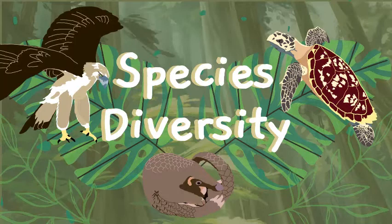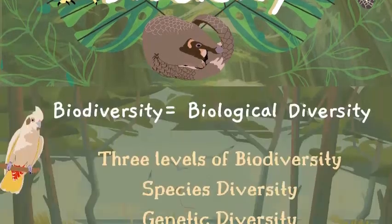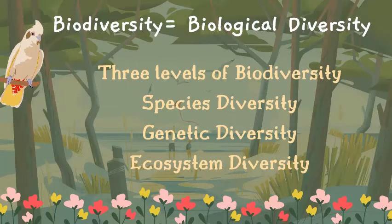The numerous species that change through time refers to what we call biodiversity. Biodiversity is coined from the words 'biological diversity.' Scientists refer to three levels of biodiversity: species diversity, which talks about different kinds of organisms; genetic diversity, which talks about the information that organisms contain; and ecosystem diversity, which covers the different kinds of places where organisms live and the interconnections that bind them together.